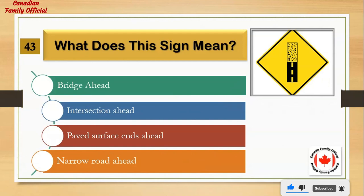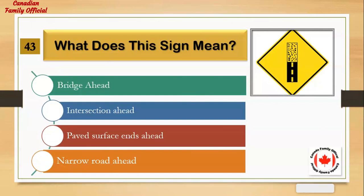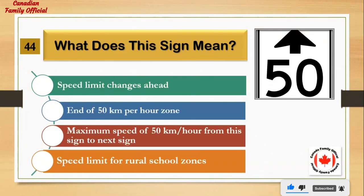What does this sign mean? Number 1: bridge ahead. Number 2: intersection ahead. Number 3: paved surface ends ahead. Number 4: narrow road ahead. And the answer is: paved surface ends ahead.